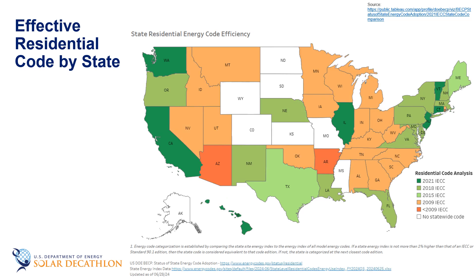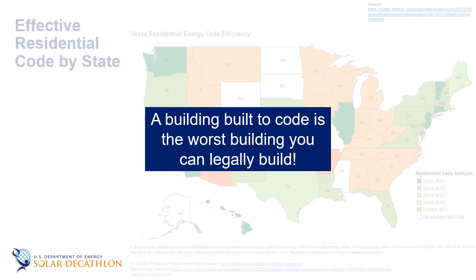We see a similar story on the residential side. A few states have adopted code equivalent to the latest version of the IECC. However, most states are still building to 2009 standards, which were written more than a decade ago. So much innovation has occurred in the building space over the past couple decades, but it takes years for new technologies and efficiency levels to be included in written standards, and then years or decades for states to adopt them. Surely we can do better than this.